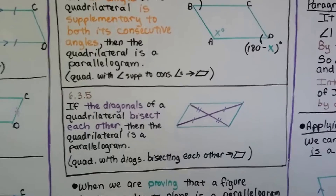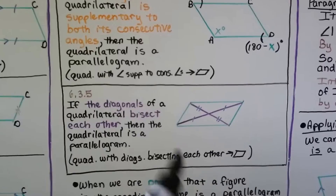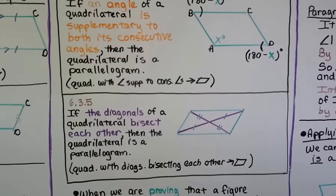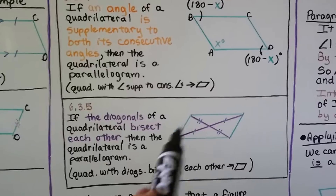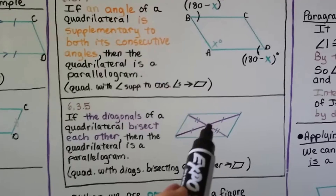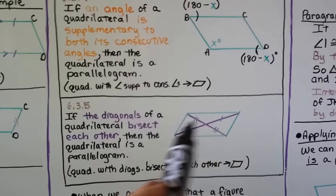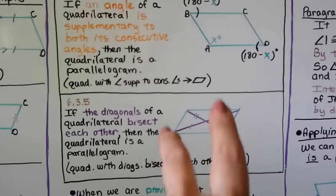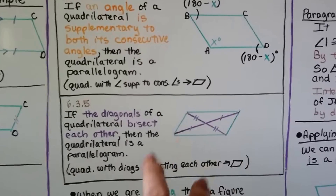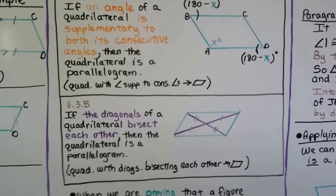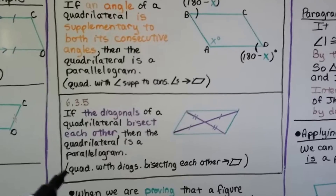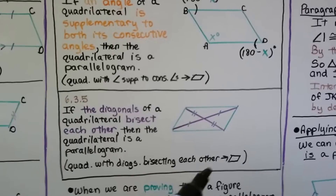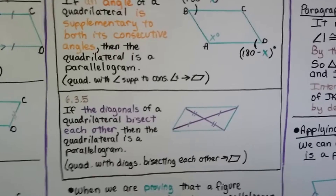Theorem five: if the diagonals of a quadrilateral bisect each other, then the quadrilateral is a parallelogram. Bisect means it cuts right dead center in half, which is why these two segments are congruent and these two segments are congruent. In geometric notation: quadrilateral with diagonals bisecting each other, therefore parallelogram.